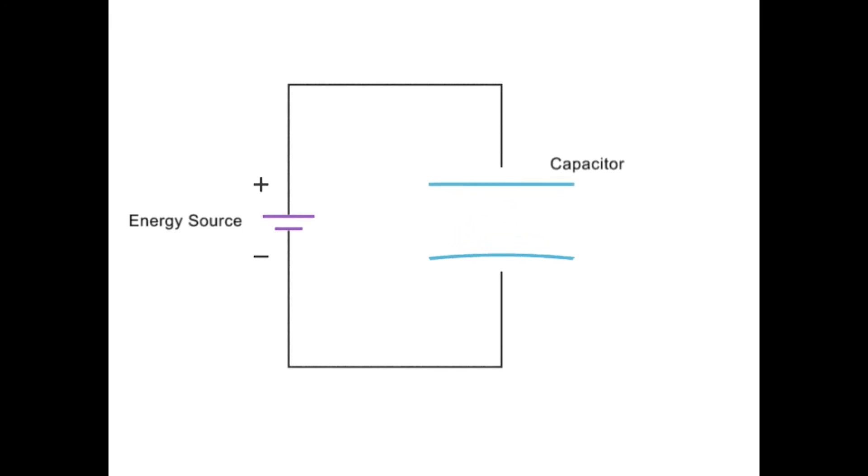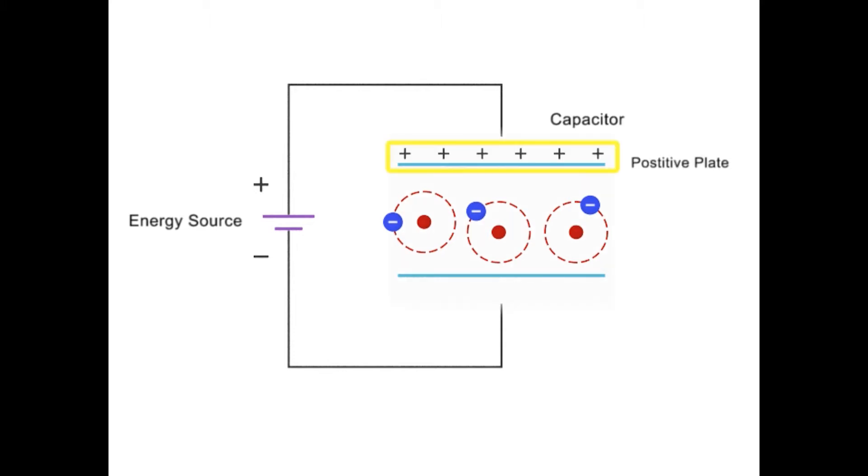Capacitors work to store energy by stretching the orbits of electrons in a dielectric compound between a positively charged plate and a negatively charged plate.